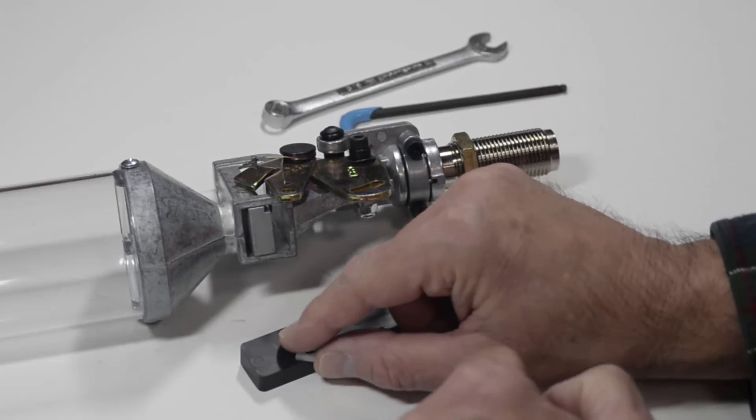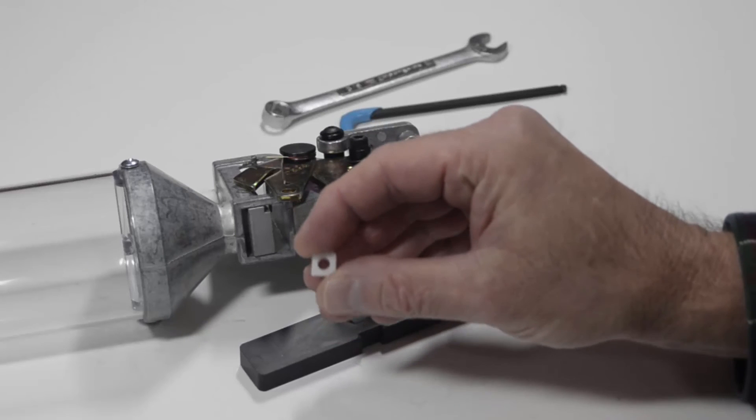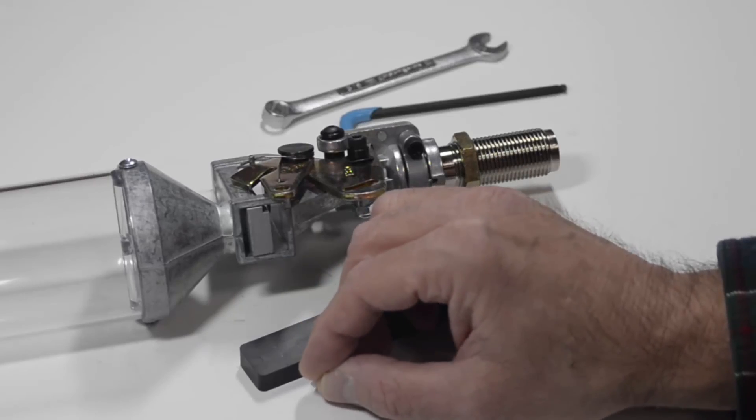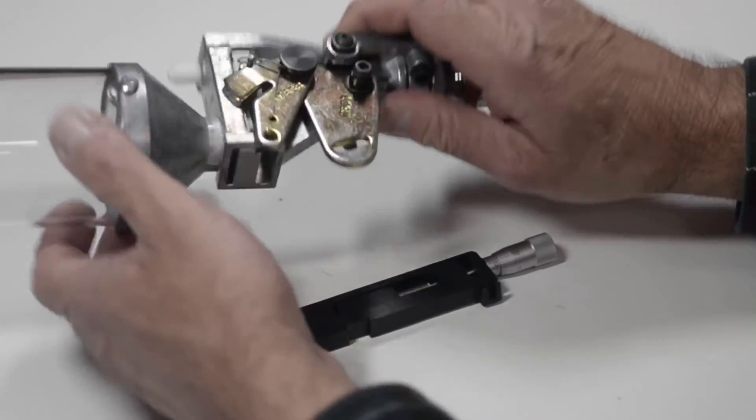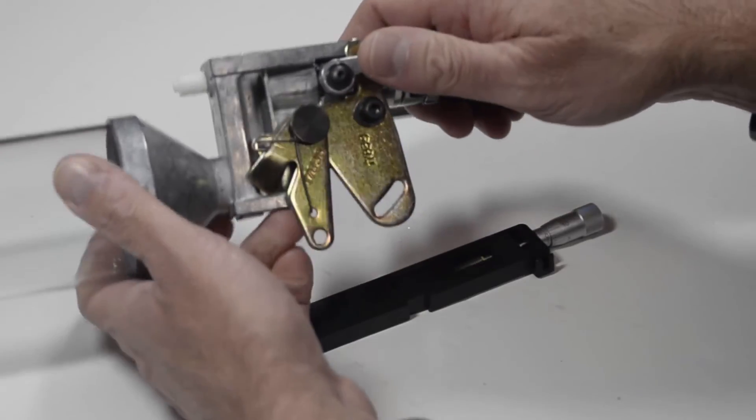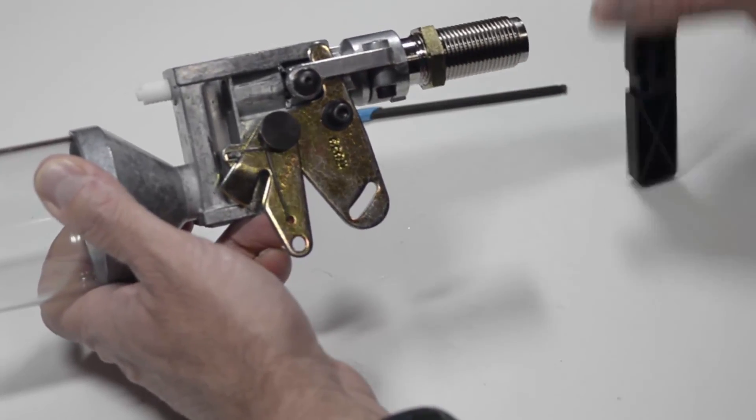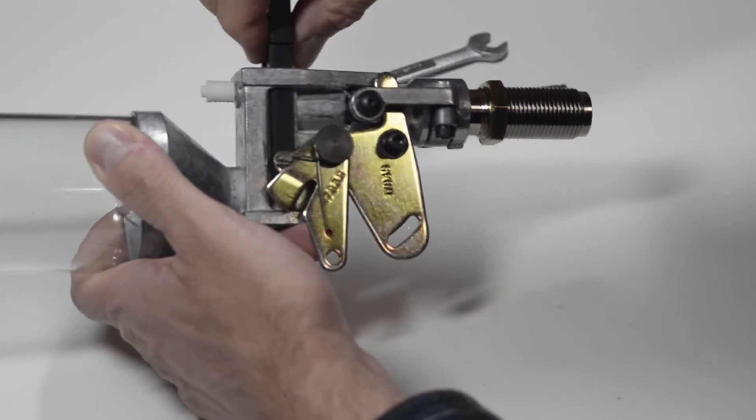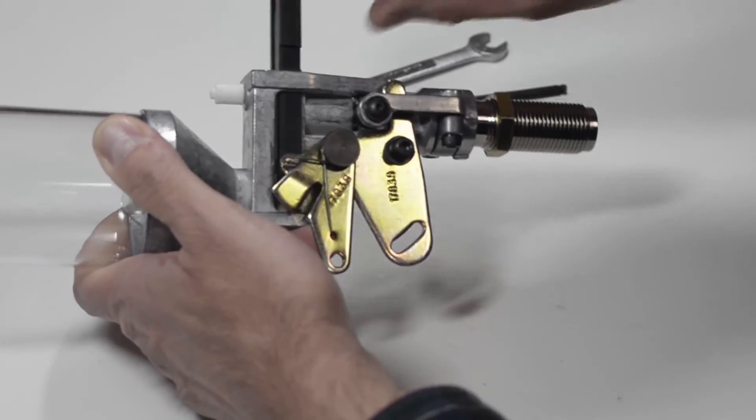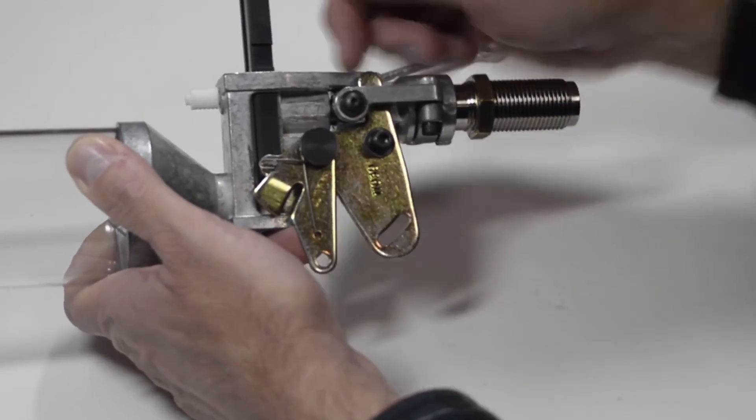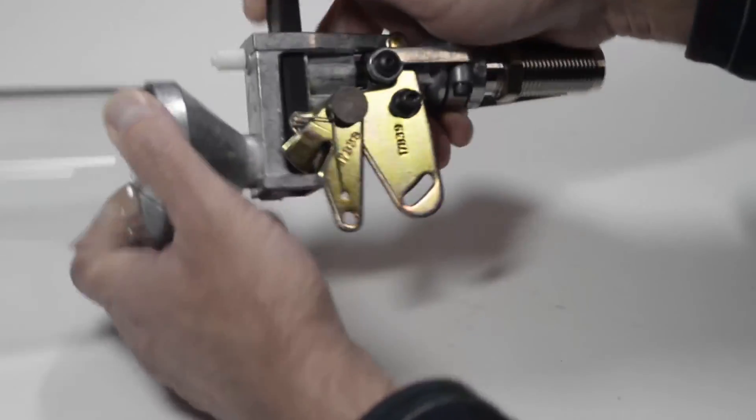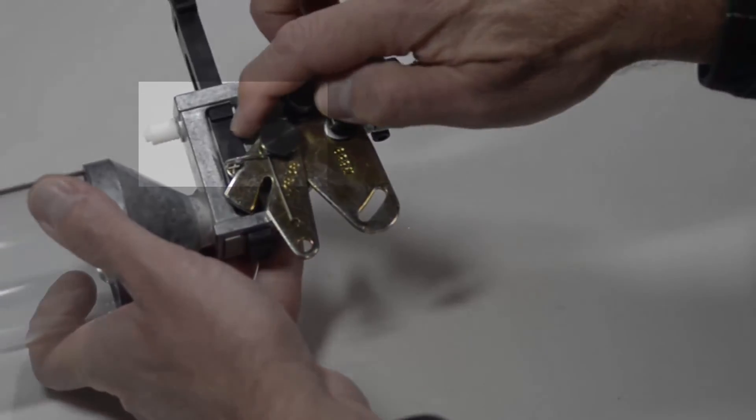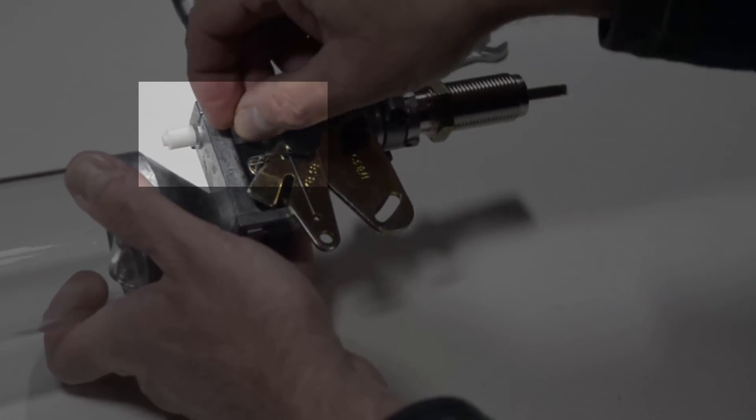If you recall, earlier when we were removing the Dillon powder bar, the white nut fell out. So we'll go ahead and install it when we install the powder bar. First let's push the bell crank out of the way. Insert the powder bar. Now remember the part that moves, let's keep it even with the rest of the powder bar, otherwise I'm just going to block it going in. Once the groove is exposed, let's go ahead and put the white nut in it.